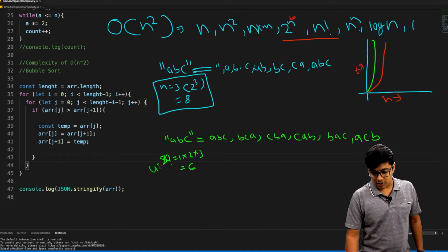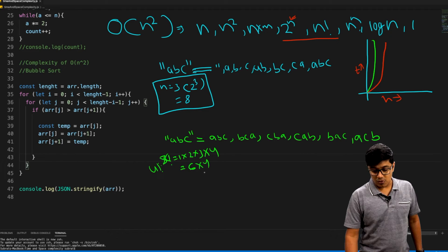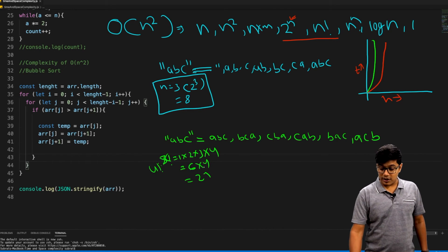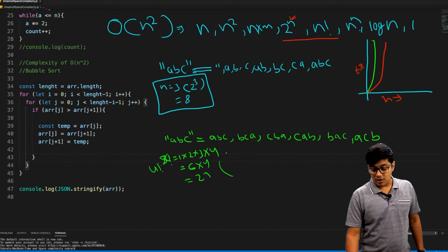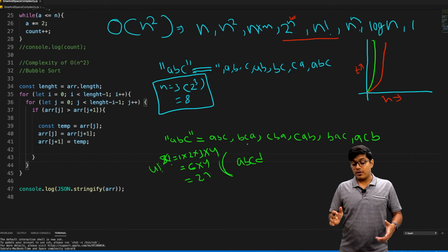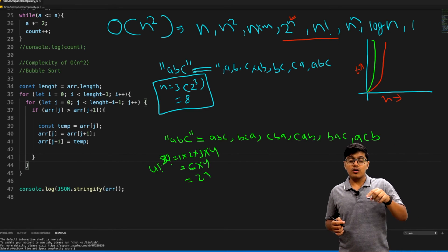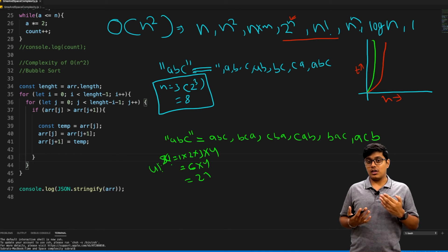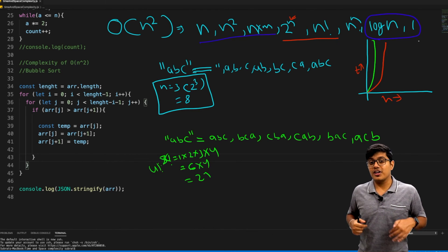Now it will be 4, so 6 into 4 will be 24. If you go for a string of value ABCD, you have 24 different permutations. What I will suggest: never go for factorial time complexity. That's it for today, guys. Today we saw different types of time complexity.